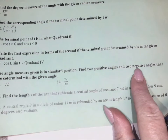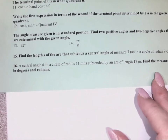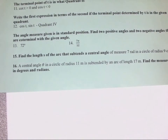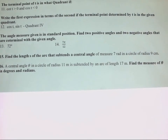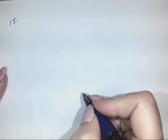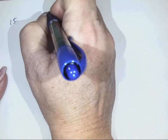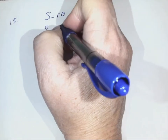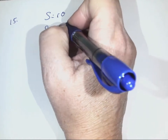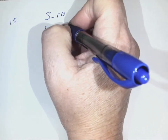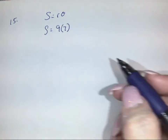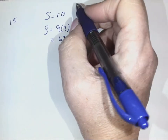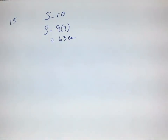Number 15: find the length S of the arc that subtends a central angle of 7 radians in a circle of radius 9 centimeters. We use the formula S = Rθ. So S = 9 times 7 = 63 centimeters.